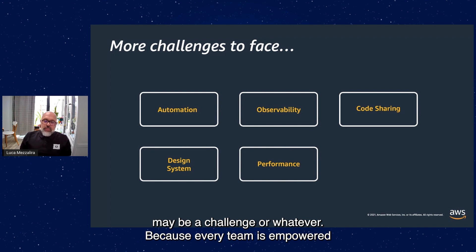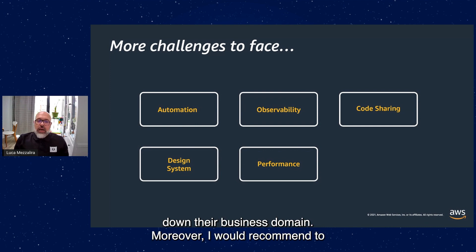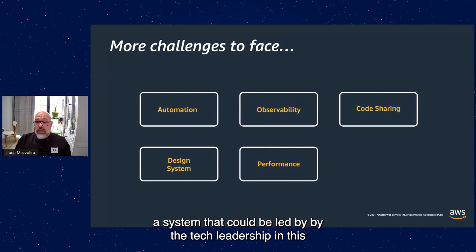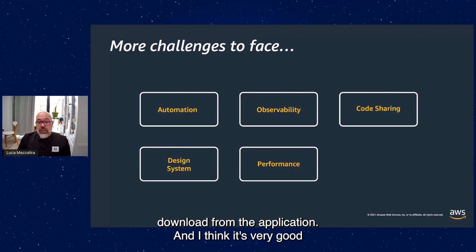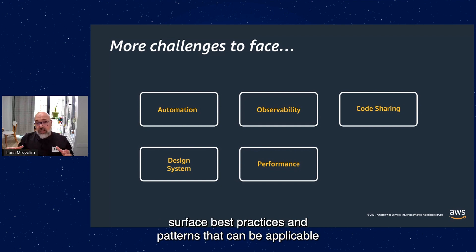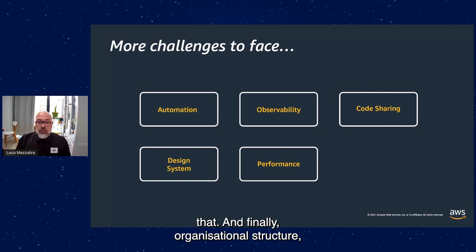Performance-wise, it may be a challenge. However, because every team is empowered to take certain decisions, they can really optimize and nail down their business domain. I would recommend creating a performance committee across the system, led by the tech leadership, to check that everything is going in the right direction — no excessive megabytes to download. This tech leadership team could also surface best practices and patterns applicable to multiple domains.